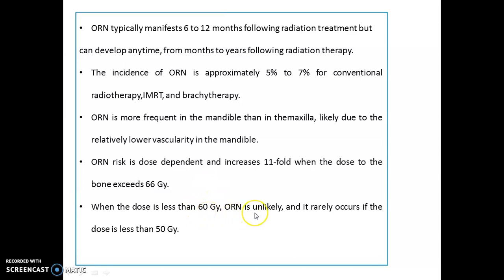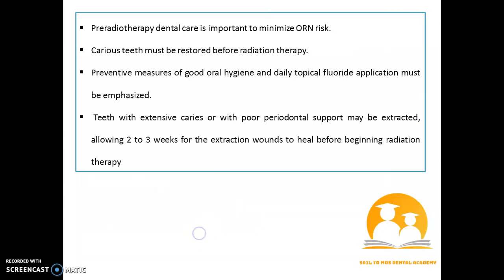When the dose is less than 60 Gray, ORN is unlikely and rarely occurs. If the dose is less than 50 Gray, it rarely occurs. Pre-radiotherapy dental care is very important to minimize ORN. Carious teeth must be restored before radiation therapy. Proper oral hygiene and topical fluoride application should be emphasized. Teeth with extensive caries and poor periodontal support may be extracted, and two to three weeks should be allowed for proper healing of the extraction wound before radiation or chemotherapy.